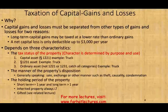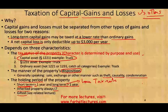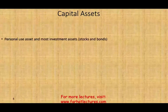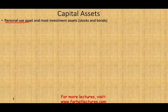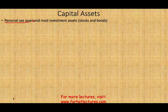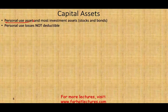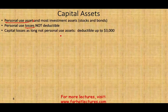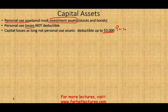Now let's focus on capital assets. Capital assets include personal use assets and most investment assets such as stocks and bonds. Remember, losses on personal use assets are not deductible, but gains are taxable. Capital losses on investment assets are deductible up to $3,000 — and we are talking about personal taxes here, not corporate. The IRS defines a capital asset under section 1221 as everything except inventory, notes and accounts receivable from sale of inventory or services, and real and depreciable property used in a trade or business.